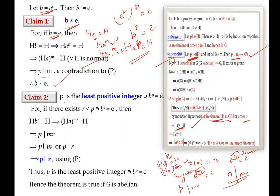Now we prove that P is the least positive integer such that B^P = E. We already know B^P = E, but we must ensure P is the least positive integer; only then can we say the order of B is P. Suppose there exists an integer R less than P such that B^R = E. We consider the coset HB^R to derive a contradiction.